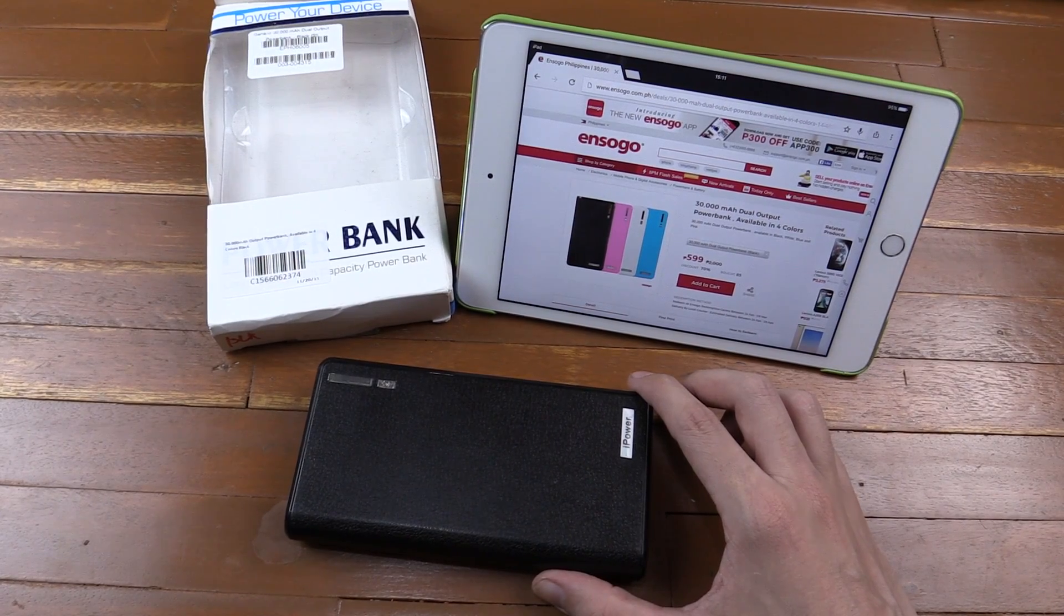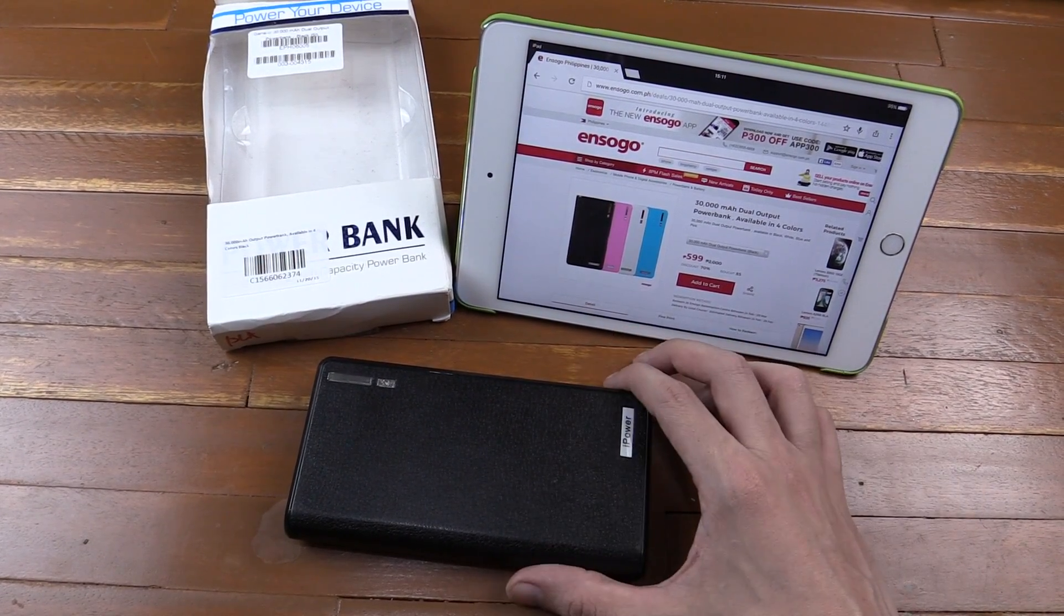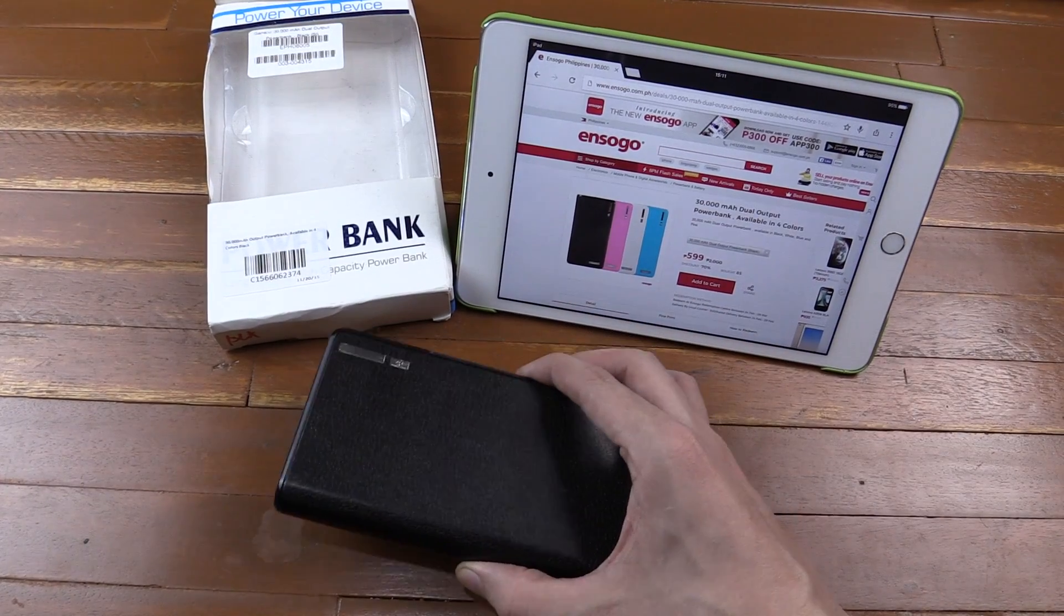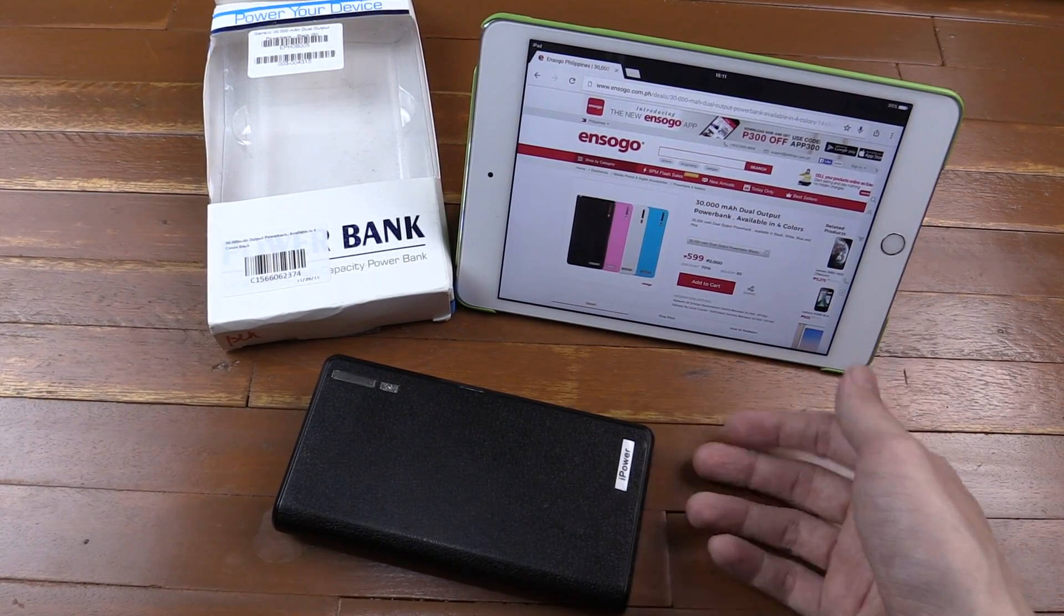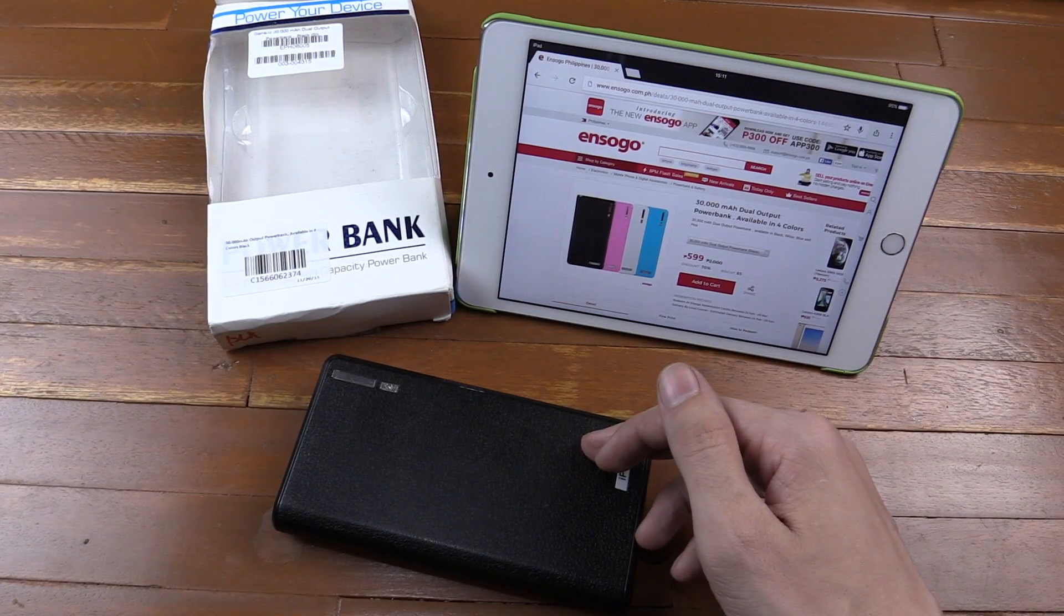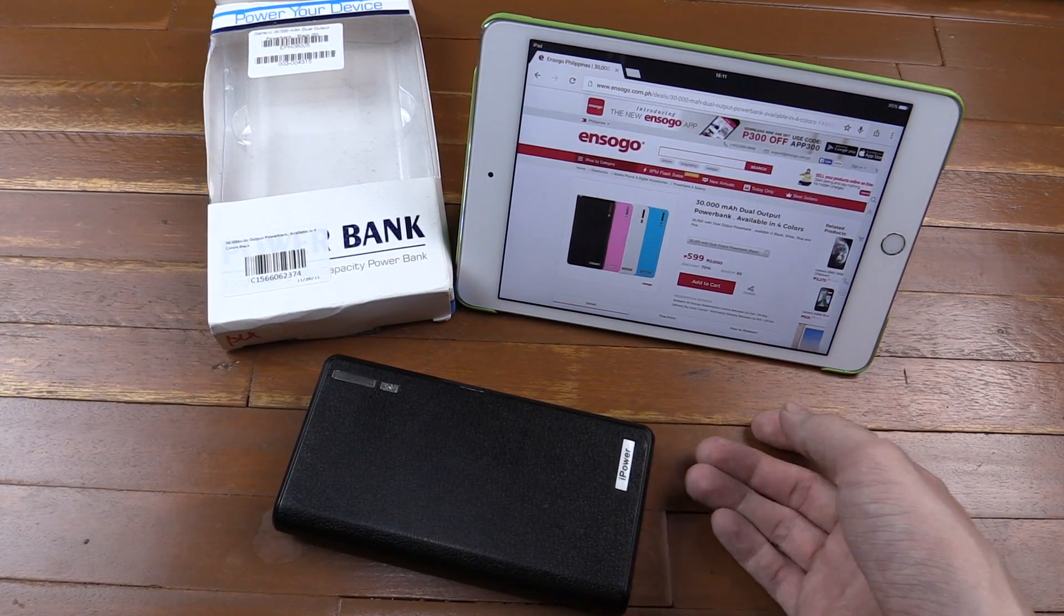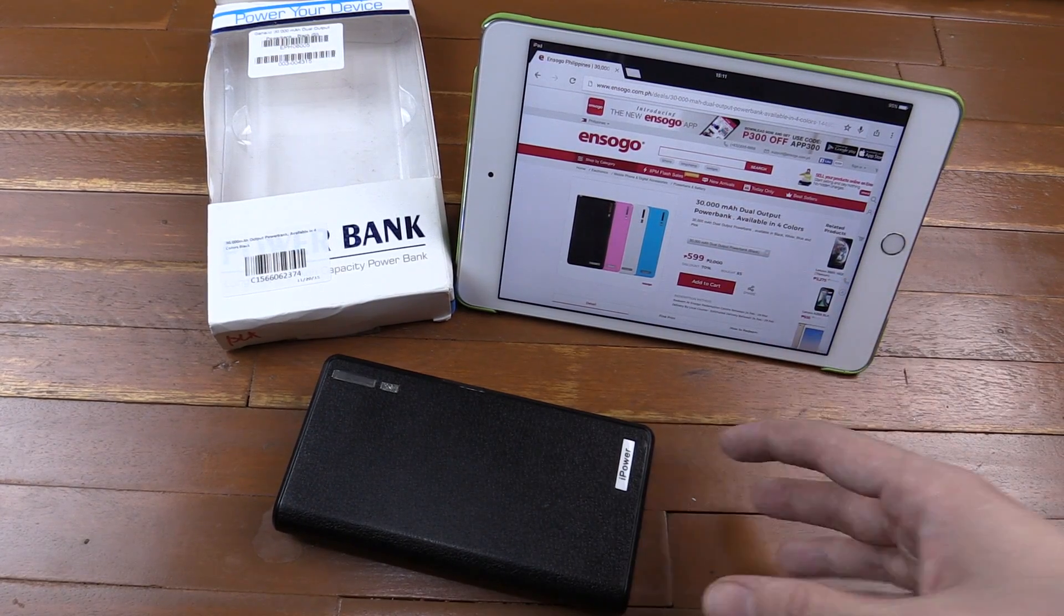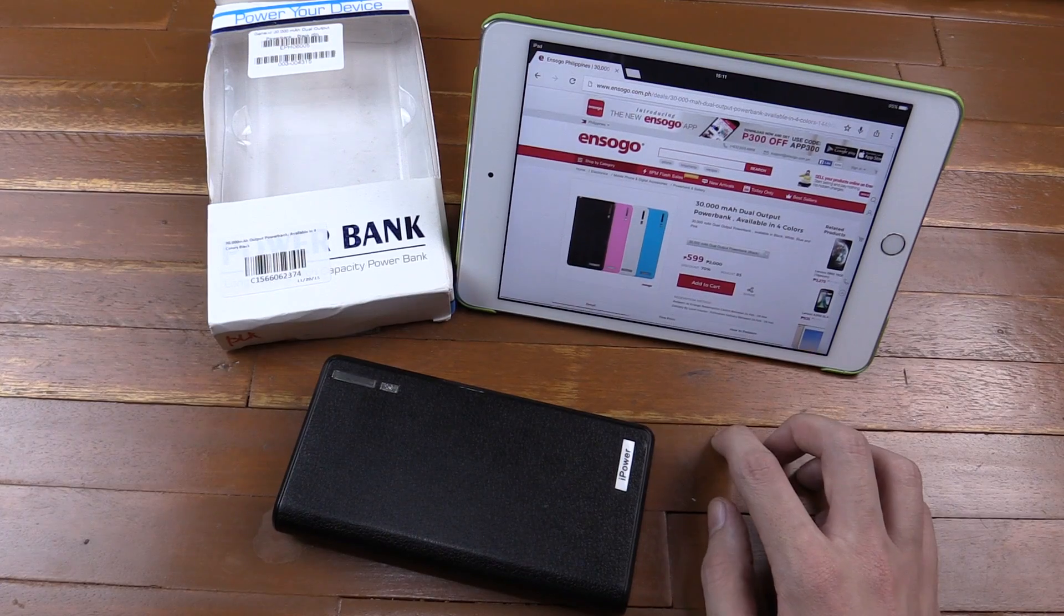Now I actually stopped buying from Ensogo for two reasons. Firstly, the quality of the products was just awful. They looked good on the site but then when you get them they were really poor. And the other reason is they normally make you wait weeks just to get your item. And then I found that a lot of the time I'd go to a supermarket or a cheap electronics store and they were selling the exact same thing for the exact same price and I could pick it up straight away. So I haven't actually used Ensogo for quite a long time.